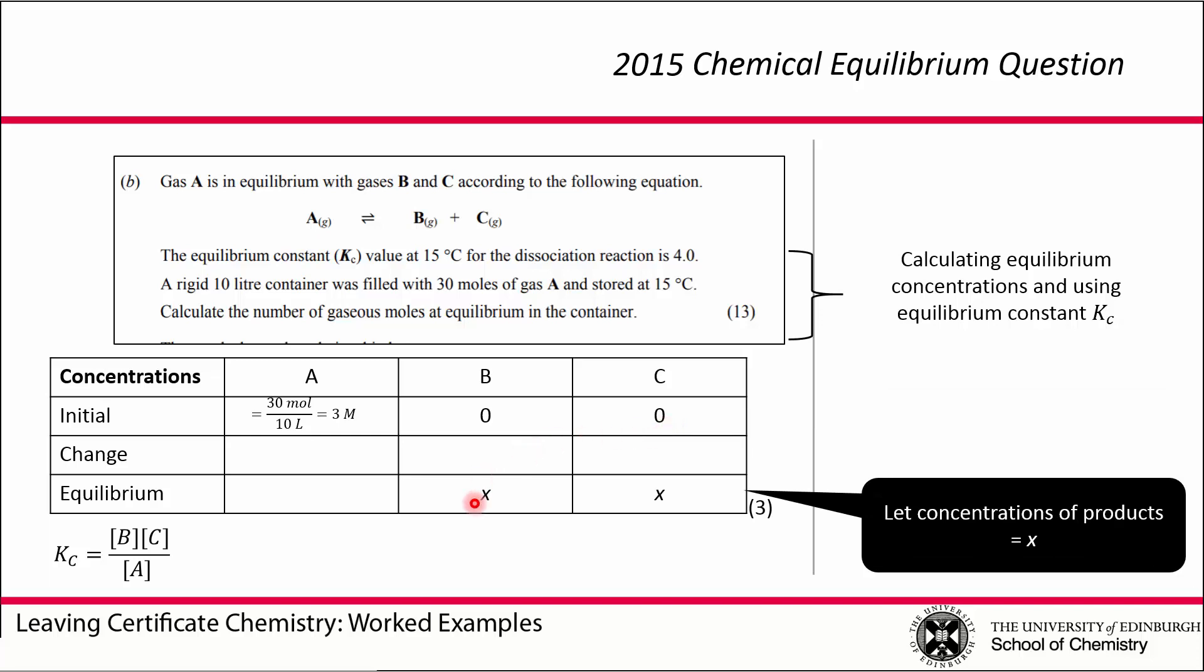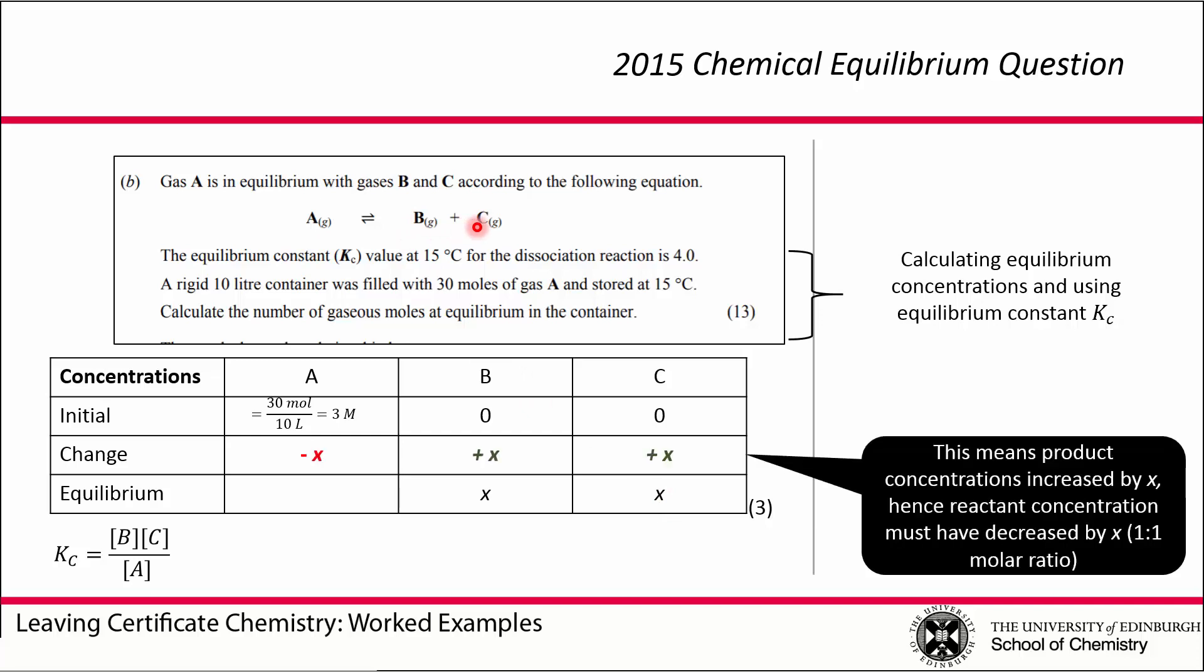We don't know what the equilibrium concentrations of B and C are, so we're going to call them X. They're both equal because it's a 1 to 1 molar ratio. In thinking about the change of reaction between starting off and reaching equilibrium, B and C have both increased by an amount X to go from 0 to X, and A has decreased by an amount X because it's a 1 to 1 molar ratio. So A has gone to 3 minus X.